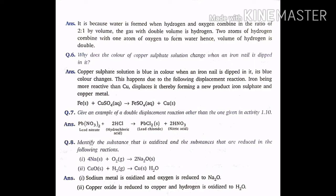Question number 6. Why does the color of copper sulfate solution change when an iron nail is dipped in it? Copper sulfate solution is blue in color. When an iron nail is dipped in it, its blue color changes. This happens due to the following displacement reaction. Iron being more reactive than copper, displaces it, thereby forming a new product, iron sulfate and copper metal. The equation for this reaction is Fe plus CuSO4 gives FeSO4 plus Cu. You indicate the symbol, write the symbol in the equation as Fe(s) and CuSO4 aqueous, FeSO4 aqueous and copper in the solid state.